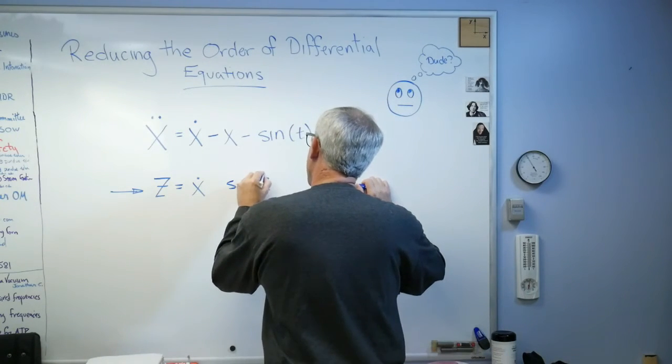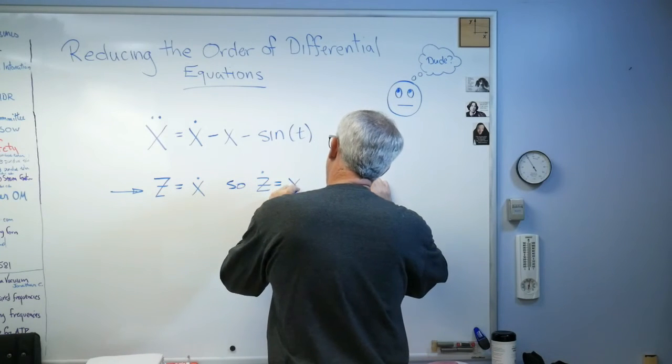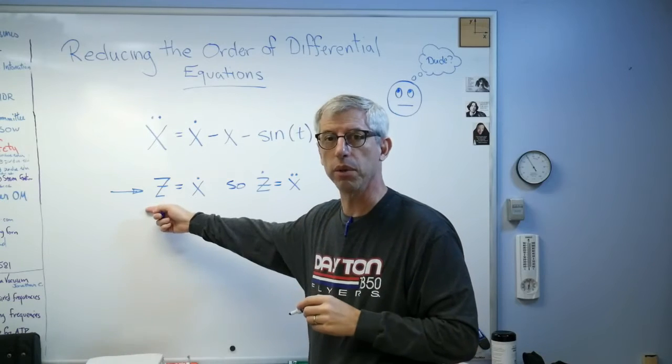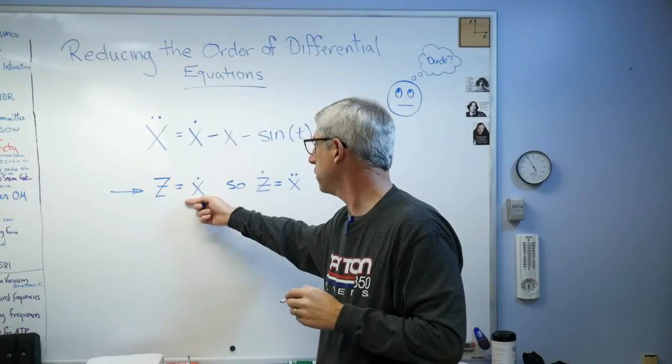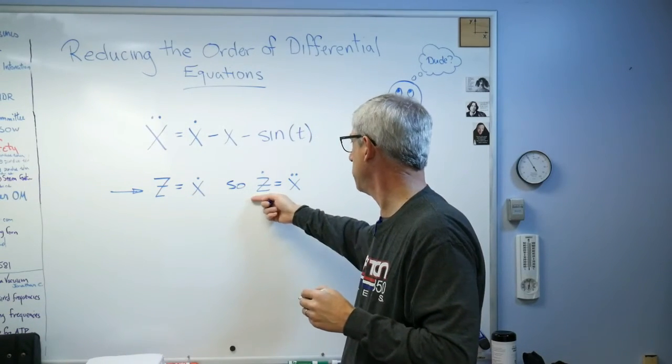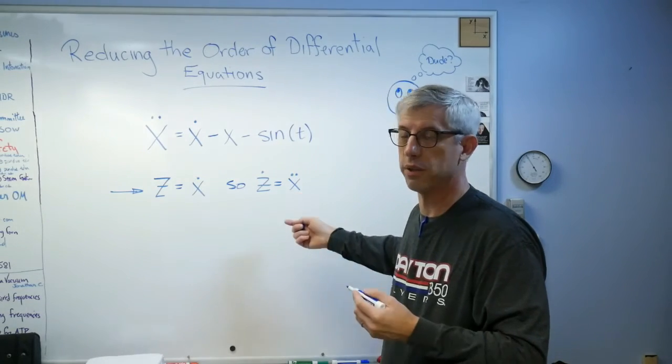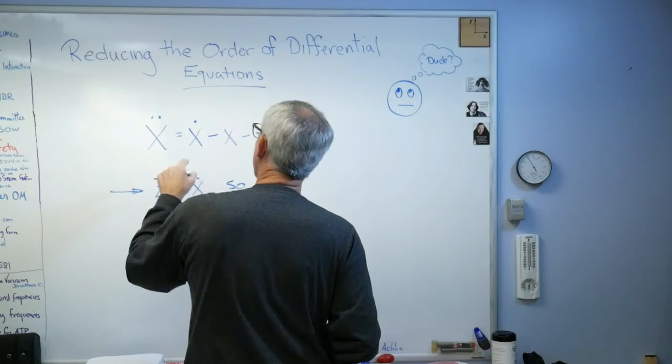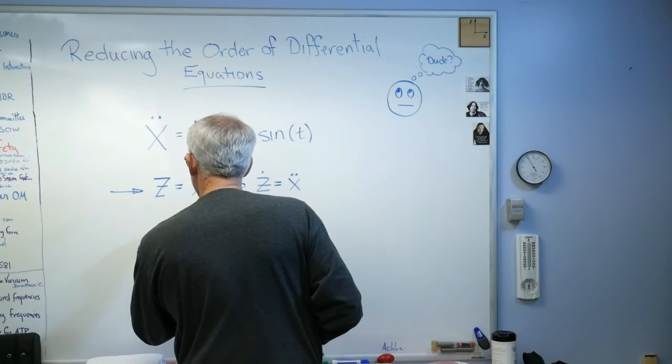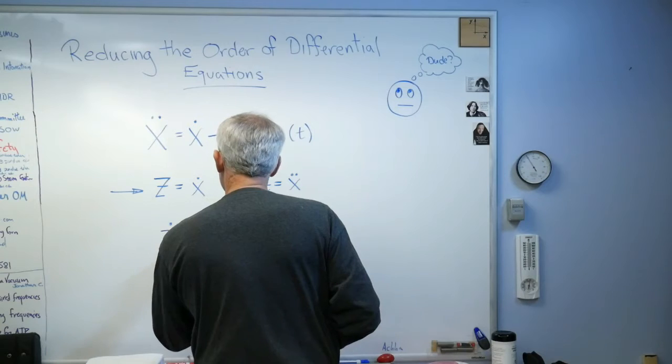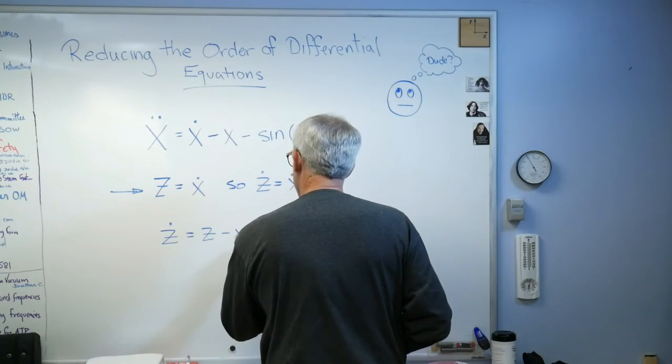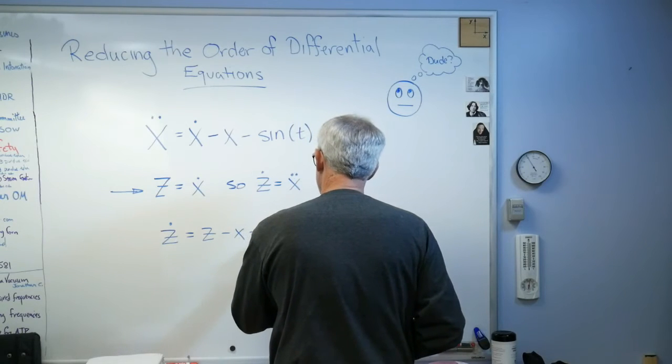So z dot equals x double dot. If that is a real variable, and it is, and it's equal to x dot, well, the derivative of that is equal to x double dot. That's all I'm saying. So what I can do here is I can put z in wherever I need to, and I can write it this way. z dot equals z minus x minus sine of t.